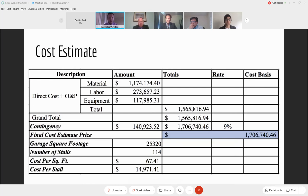So here shows a table that has our material labor equipment direct cost plus the overhead and profit built in to give us a grand total of a little over 1.5 million and then when you build in the contingency of nine percent we're sitting at 1.7 million, a little over 1.7 million. This gives us a cost per square foot of $67.41 and that cost per stall a little under 15 grand which is well under the 30 grand that our sponsor would like. Even though we excluded geotechnical work, I feel like we'd still sit under that 30 grand.